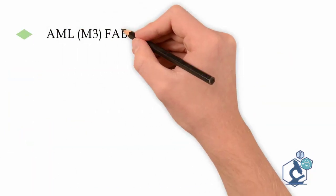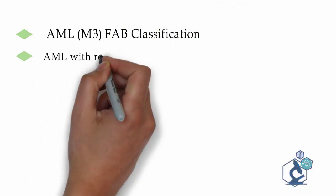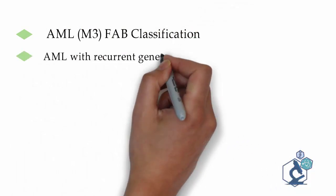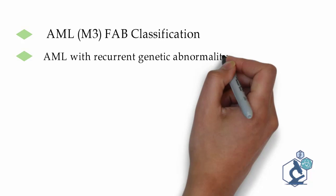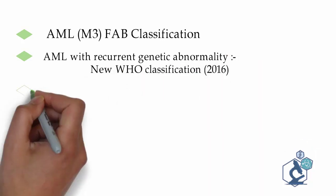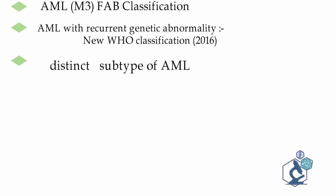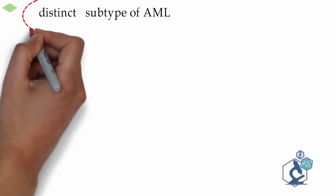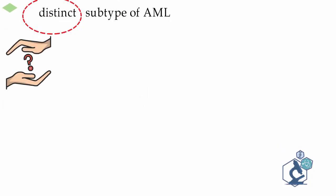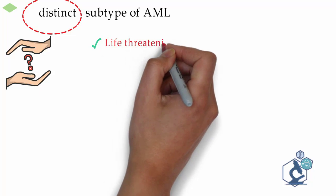APML is classified as M3 under the FAB classification, and as AML with recurrent genetic abnormality under the new WHO classification. It is a very distinct type of AML.